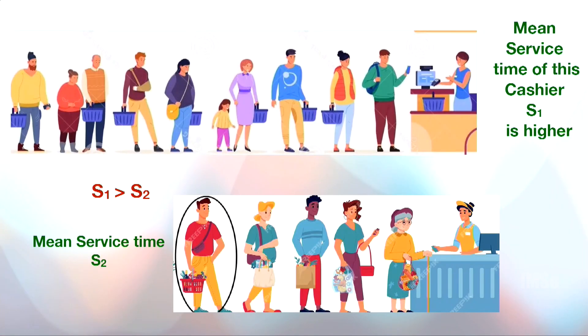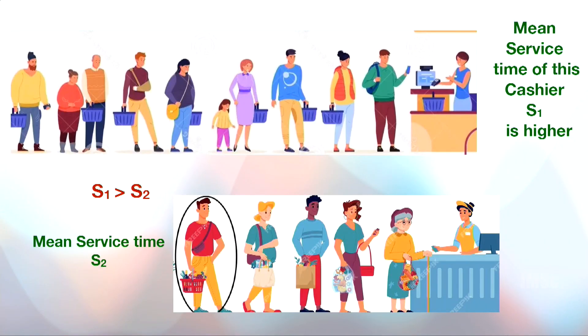Suppose you are in a supermarket and you are shopping. After you have done your shopping, you want to stand in a queue to make the payment. You see there are two queues in front of the cash counter — one queue is larger than the other. For the first queue, as it is large, you would expect the mean service time of that cashier is higher. So we stand in the shorter queue. But after some time, you may find that the last person has already made their payment and left, while you are still waiting stuck in the queue. This happens to every one of us — the queue we select moves slower than the other.